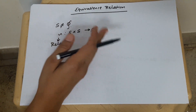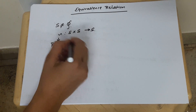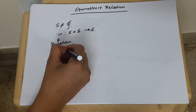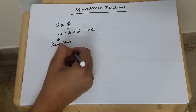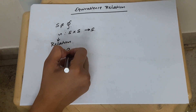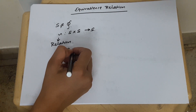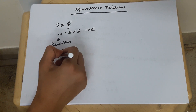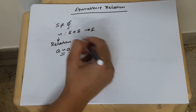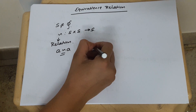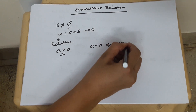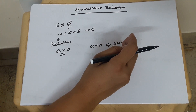A relation from S cross S to S is called an equivalence relation if it satisfies the following properties. First, every element of S should be related to itself — that is, A should be related to A. This property is called reflexive. Second is the symmetric property: if A is related to B, then B should be related to A.